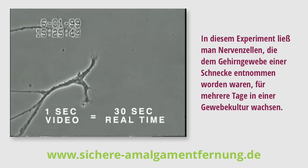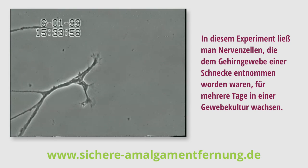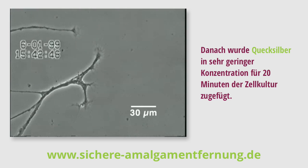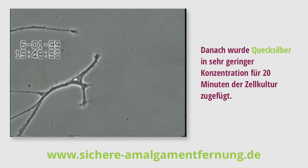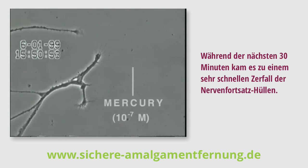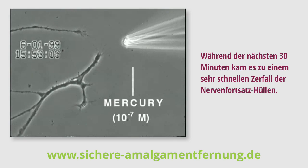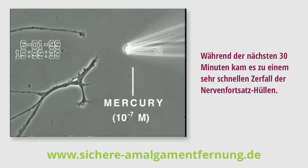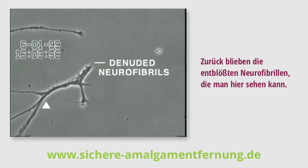In this experiment, neurons also isolated from snail brain tissue were grown in culture for several days, after which very low concentrations of mercury were added to the culture medium for 20 minutes. Over the next 30 minutes, the neurite membrane underwent rapid degeneration, leaving behind the denuded neurofibrils seen here.